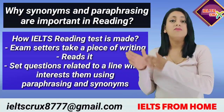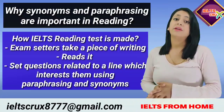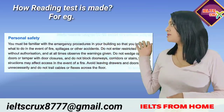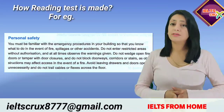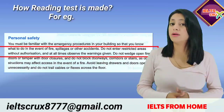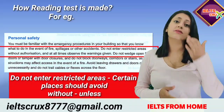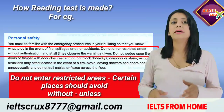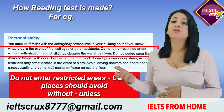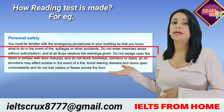So all 40 questions of the reading test have the same meaning as the passage, but they are written in a different way. For example, this is one paragraph of a passage. In a line it says: 'Do not enter restricted areas without authorization and at all times observe the warnings given.' The examiner could rephrase it using synonyms — instead of 'do not enter restricted areas,' he would use 'certain places should avoid,' and instead of 'without,' he would use 'unless.'